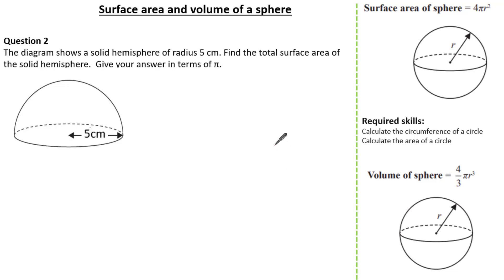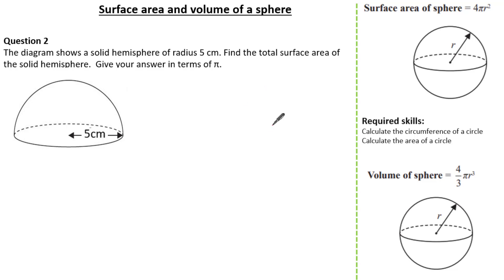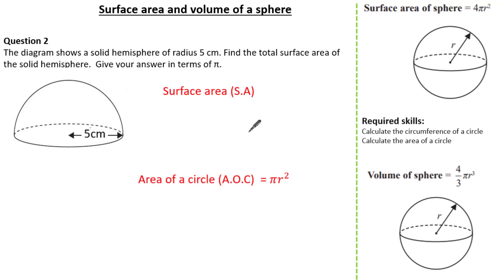Now let's try a slightly harder question. This question shows a hemisphere — half of a sphere — with a radius of 5 cm. We are asked to work out the total surface area of the hemisphere and give our answer in terms of pi. Note that the hemisphere has two faces: the curved area around the solid and a circle on the base, so we must use two different formulas.